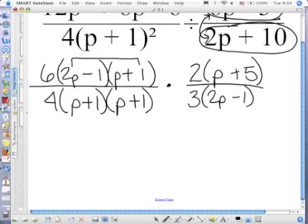Now let's restrict our P's in the denominator only. Negative 1 and positive 1 half. You don't have to write negative 1 twice. We have factored. We've restricted. Now we're going to cancel. 2P minus 1. P plus 1.